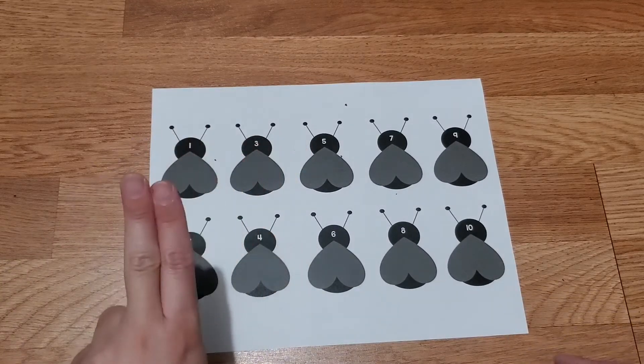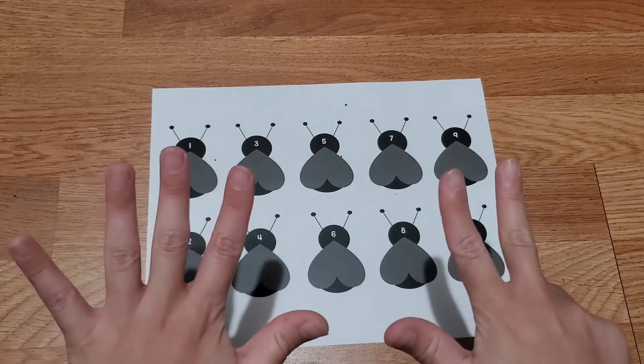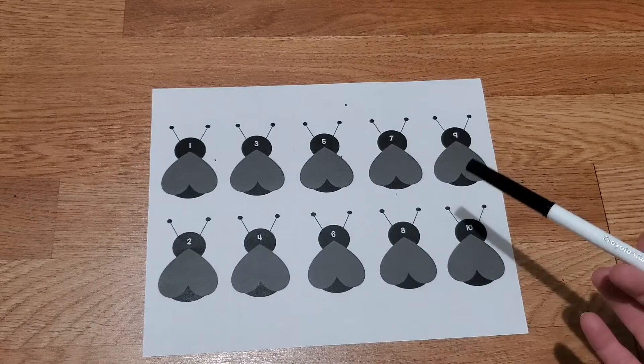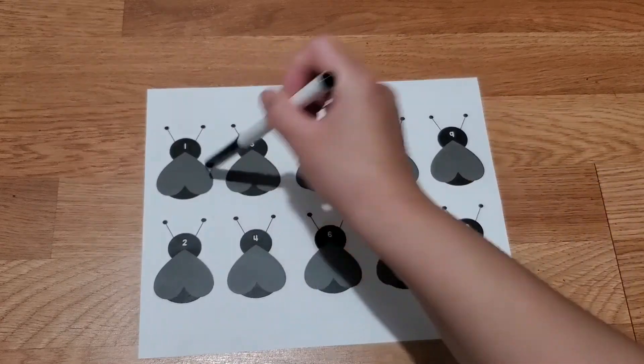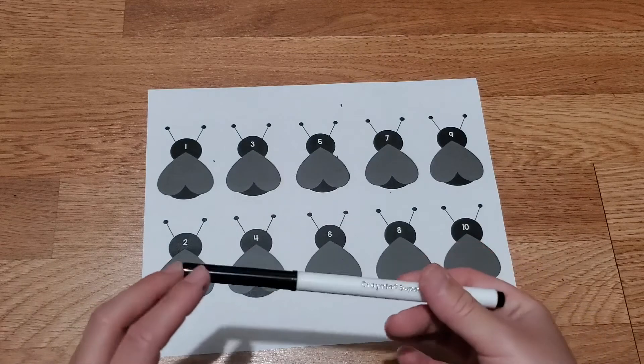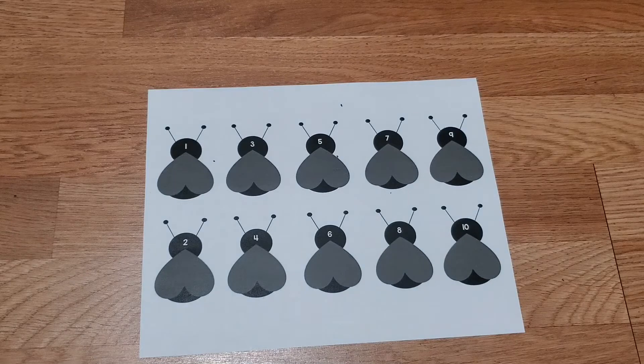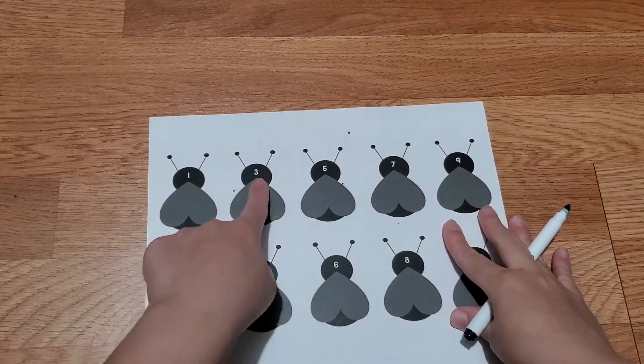All right, so what we're going to do is you can grab q-tips with paint and you can make dots with them, or you can just use a simple marker like I am doing. This will be a quick and easy peasy activity.